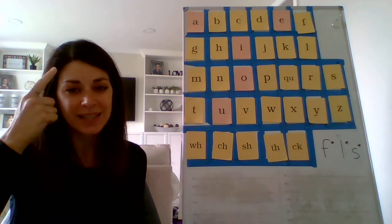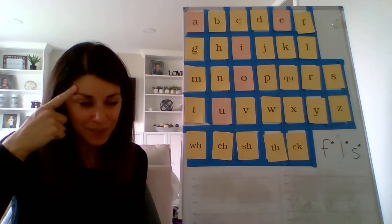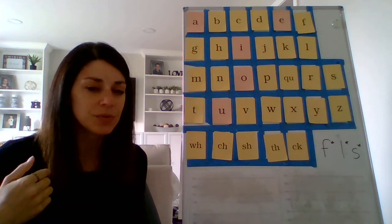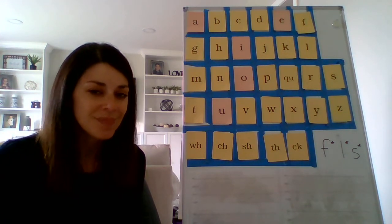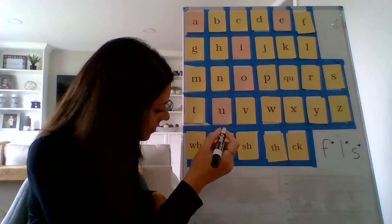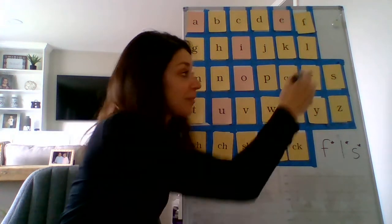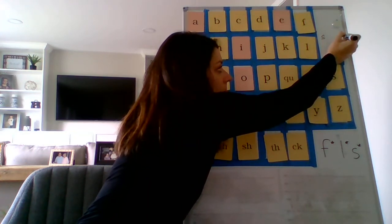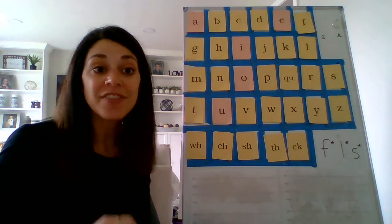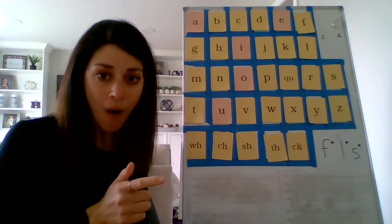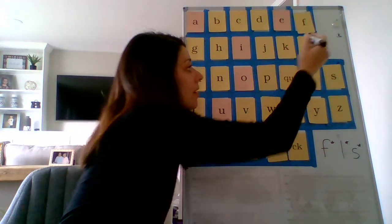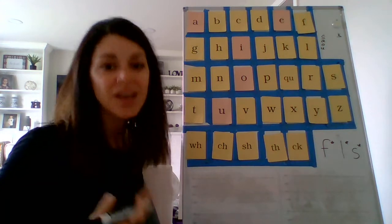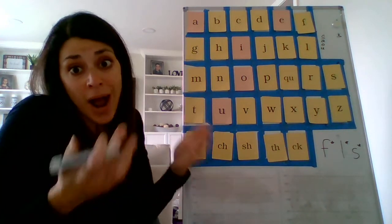You can think back to that chart that's in our classroom. We have a list of when to use a C and when to use a K. I'm going to let you think real hard for a minute. So I'm going to make a C line and a K line. The C is used if the next letter is an A, an O, or a U. You can think of it like all the round letters go with the C, which is a round letter. That might help you remember it.